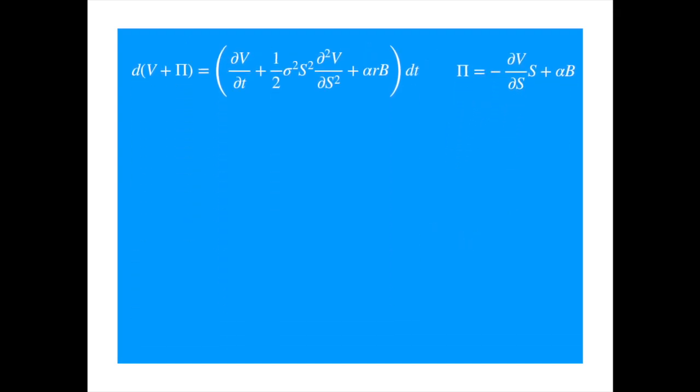Now, the total portfolio has only a deterministic term, and hence it must grow at the risk-free rate to avoid arbitrage. We substitute for pi, equate the right-hand side, cancel the B terms.